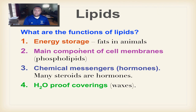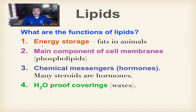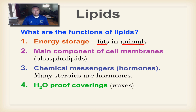What are the functions of a lipid? There are four — remember EMCH. First, energy storage: fats are used to store excess energy so an organism can live off its fat during tough times. This is mainly found as fats in animals; plants mainly use starch, a type of carbohydrate, for energy storage rather than lipids.